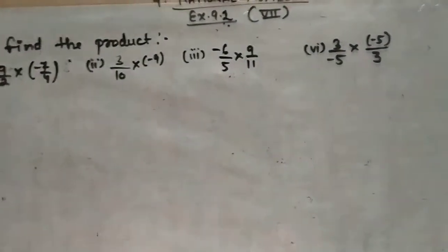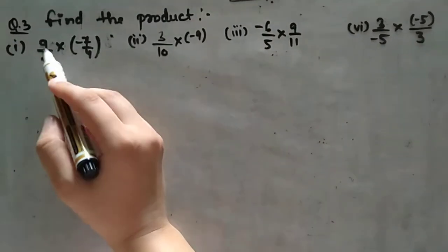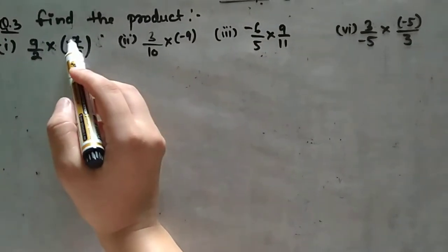So let's start with part 1. Here you see 9 upon 2 multiplied by minus 7 upon 4.